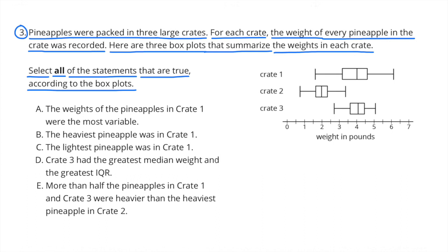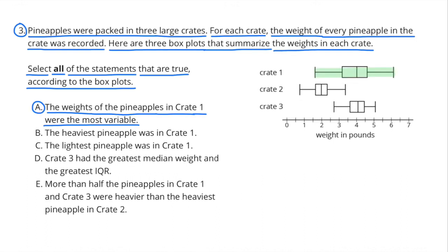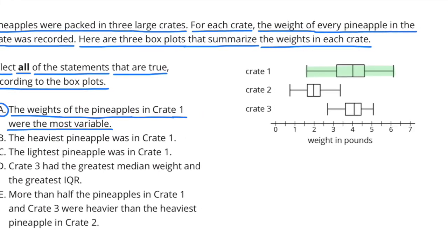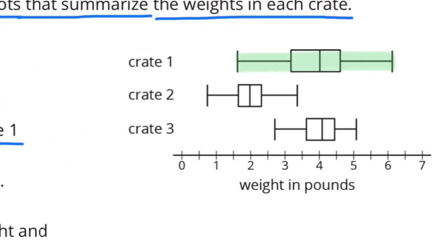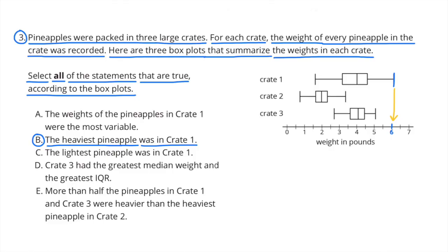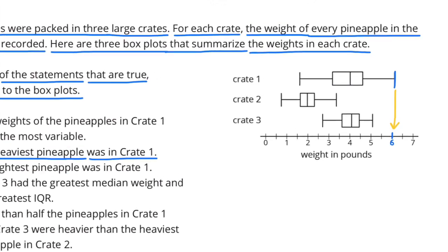Number 3. Pineapples were packed in three large crates. For each crate, the weight of every pineapple was recorded. Here are three box plots that summarize the weights in each crate. Select all statements that are true according to the box plots. Statement A: The weights of the pineapples in crate 1 were the most variable — yes, that's true; the weights in crate 1 varied the most. Statement B: The heaviest pineapple was in crate 1 — yes, that's true; it weighed 6 pounds.